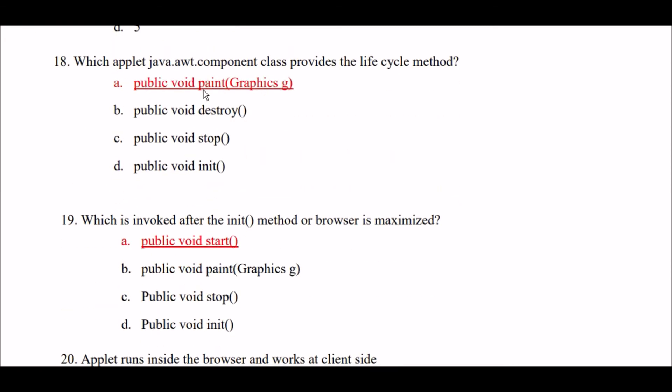Which java.awt.Component class provides a lifecycle method? Option A: public void paint(Graphics g). Option B: public void destroy. Option C: public void stop. Option D: public void init. Right answer is Option A — public void paint(Graphics g) method.